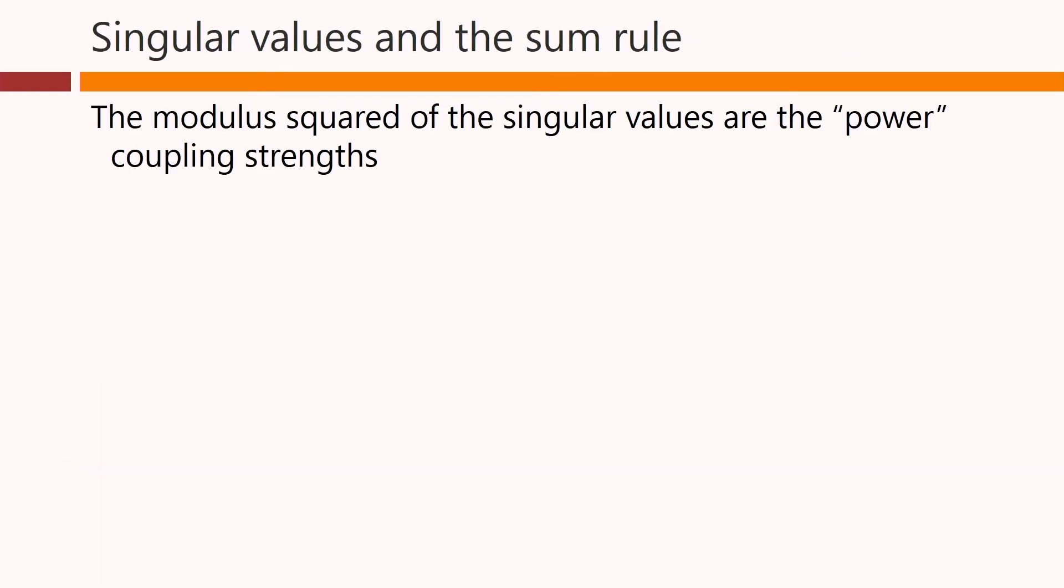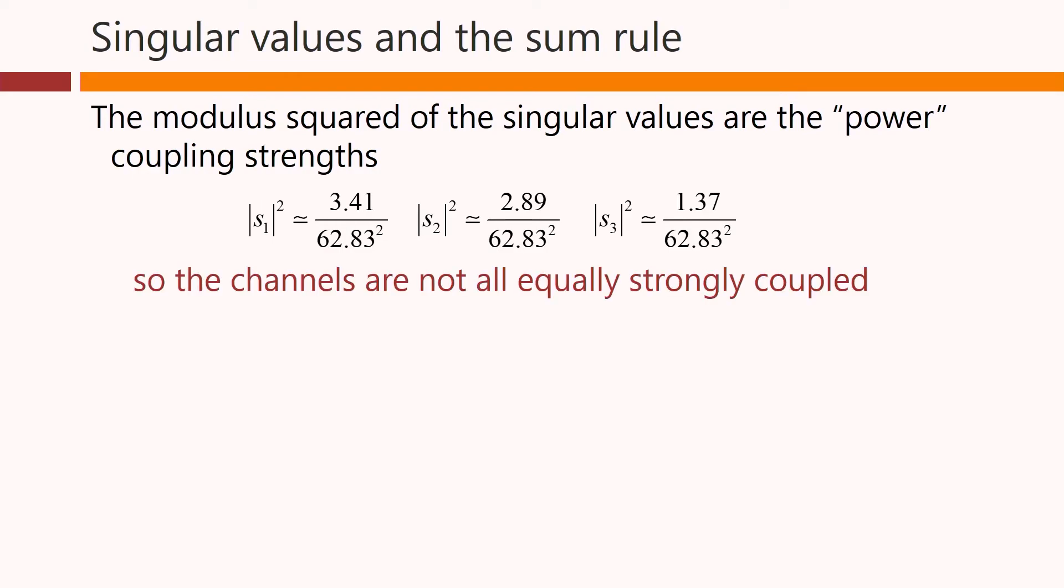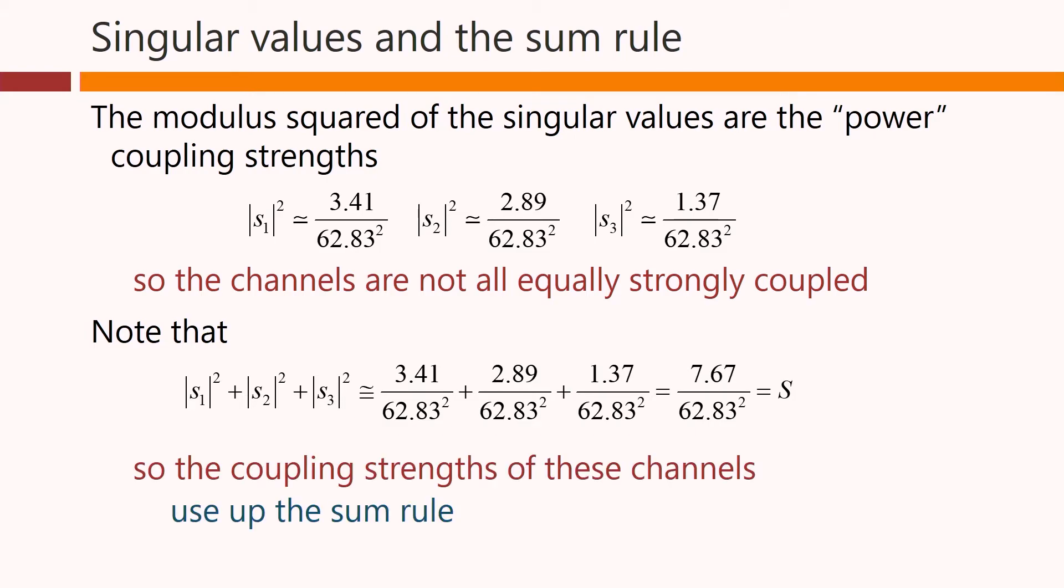The modulus squared of the singular values are the power coupling strengths in this problem. So these numbers here that we get from that eigenproblem. So we see, first of all, that the channels are not all equally strongly coupled. These numbers are somewhat different. Note, incidentally, that the sum of these power coupling strengths is the same number we got before by adding up the modulus squared of all of the matrix elements. So the coupling strengths of these channels use up the sum rule.